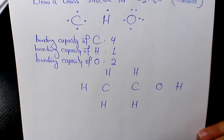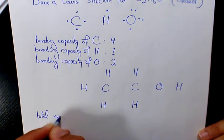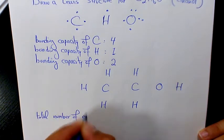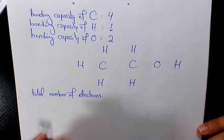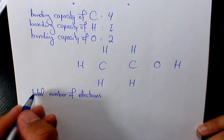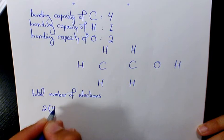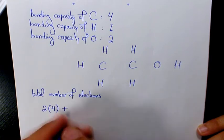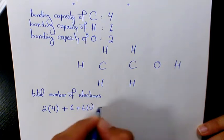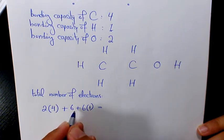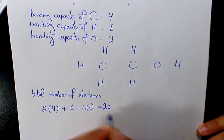Now we need to count the total number of electrons. We have 2 carbons — 2 times 4 — plus 1 oxygen — 6 — plus 6 hydrogens — times 1. So 2 times 4 is 8, plus 6 is 14, plus 6 gives us 20. So 20 is the total number of electrons available.